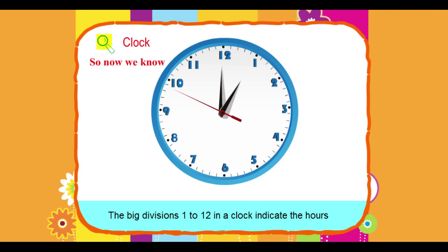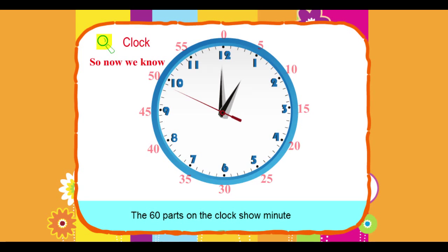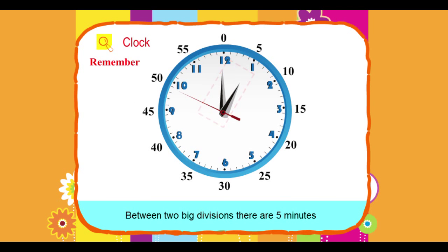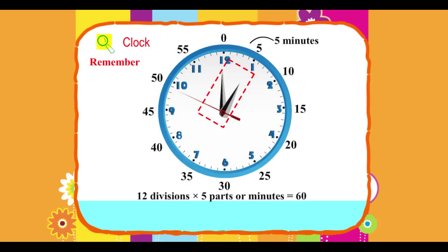So now we know the big divisions 1 to 12 in a clock indicate the hours. The 60 parts on the clock show minutes. Remember, between two big divisions, there are 5 minutes. 12 divisions into 5 parts of minutes equals 60.